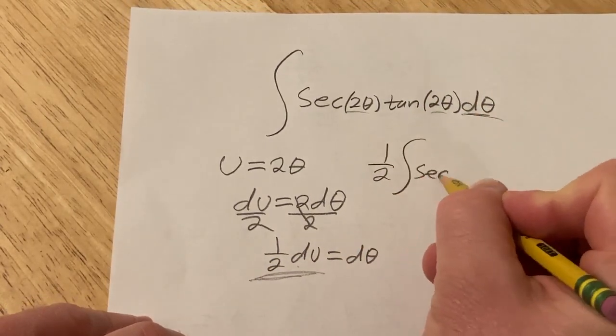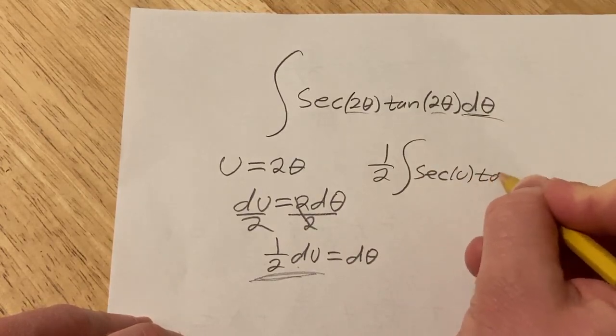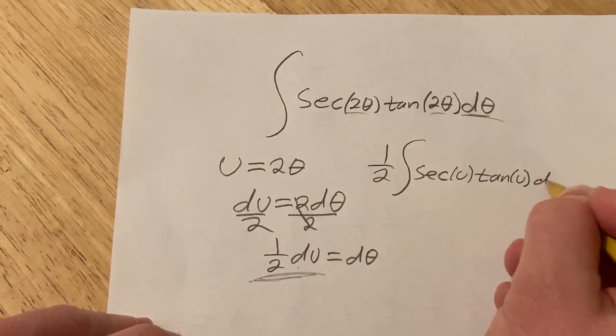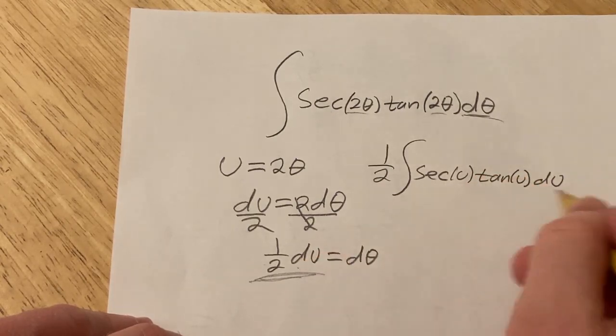So here we have secant of u, tangent of u, and then du. Because the d theta is 1 half du, which is here.